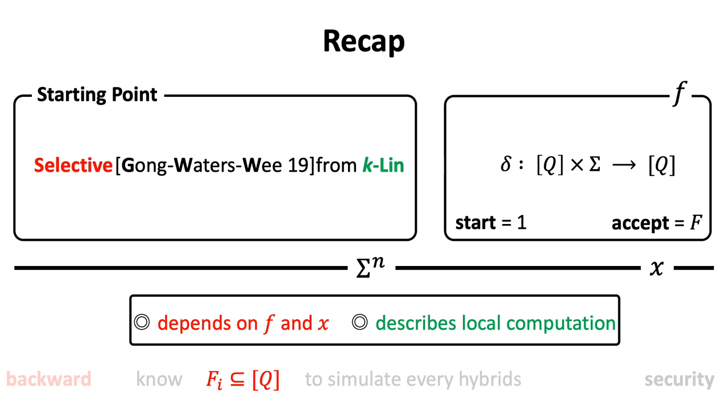And we need to know a set of states to simulate every hybrid in the security proof. Here, it is the set Fi that describes the so-called local computation of DFA we have mentioned. This makes a proof under simpler k-linear assumption possible. And clearly, it depends on both f and x.